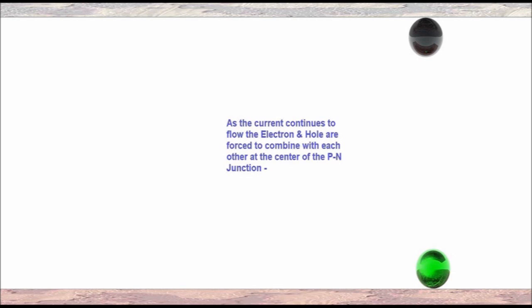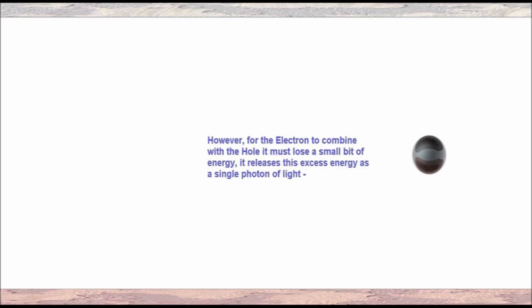As the current continues to flow, the electrons and holes are forced to combine with each other at the center of the P-N junction. However, for the electron to combine with the hole, it must lose a small bit of energy. It releases this excess energy as a single photon of light.